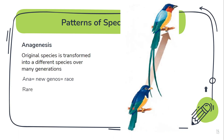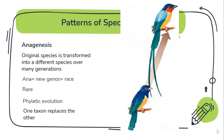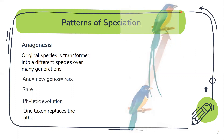The word 'ana' means new and 'genos' means race. It is a very rare phenomenon and is also called phyletic evolution. One key point is that the original species is entirely replaced by the new species, so one taxon is replaced by the other. This mechanism actually decreases diversity because one species replaces the other.